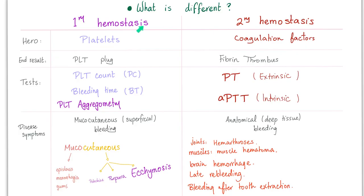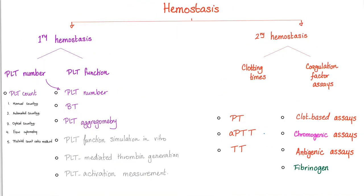Primary hemostasis happens first — this is the formation of the platelet plug, and these are the tests. Secondary hemostasis happens later; these are the coagulation factors. They end up in a fibrin thrombus, which traps the red blood cells. To test secondary hemostasis, we have PT, PTT, ACT, and TT. Let's add ACT to our list here.